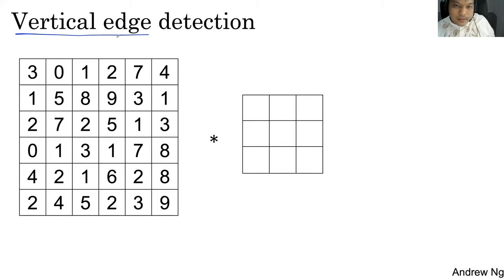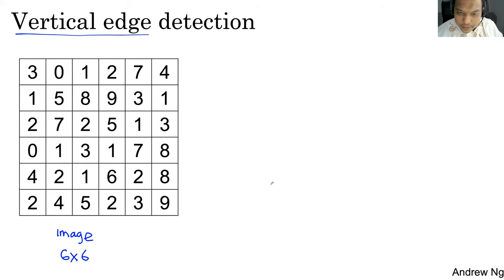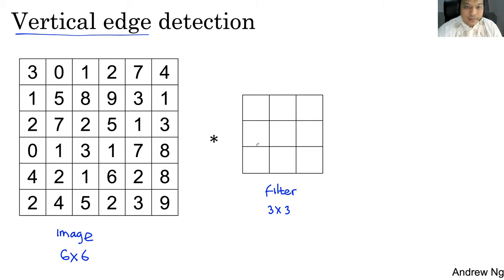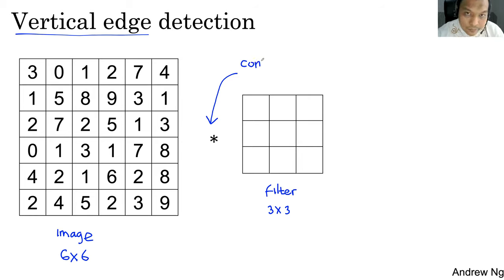Jadi misalkan kita masuk ke vertical edges dulu. Setelah itu kita bahas horizontal edges, terus kita generalize ke edges dengan orientasi lainnya. Ini adalah gambarnya — inputnya adalah image resolusi 6x6. Ini adalah filters — filternya adalah 3x3. Filter ini misalkan untuk merekognize vertical edges. Operasi ini, kalau dalam machine learning AI, kita definisikan sebagai convolution.